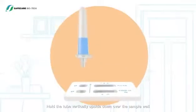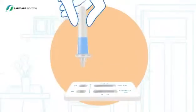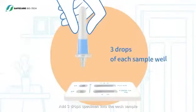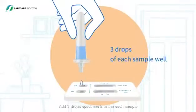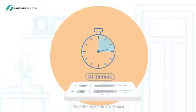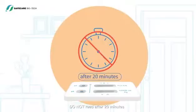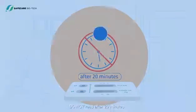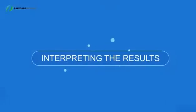Add three drops of specimen into each sample well by gently squeezing the sides of the tube. Then start the timer. Read the results in 10 to 15 minutes. Do not read after 20 minutes.